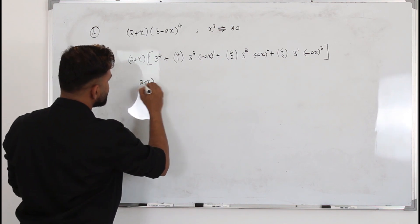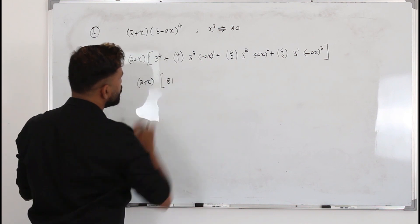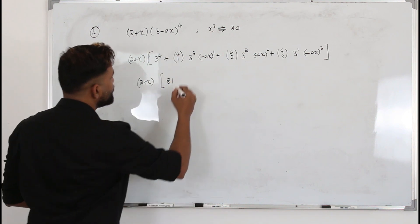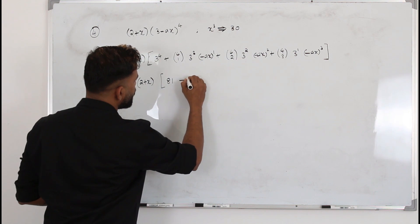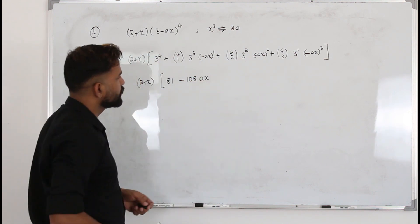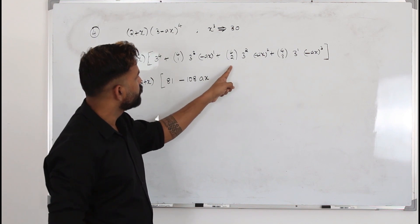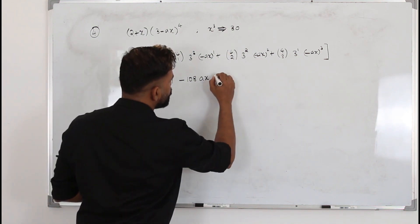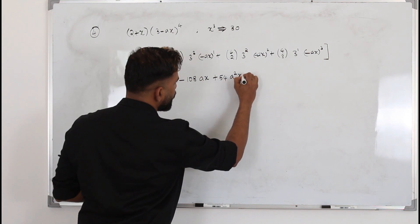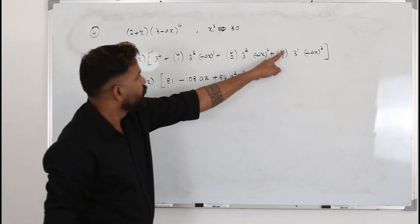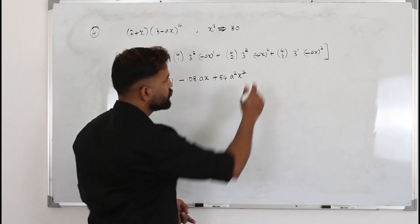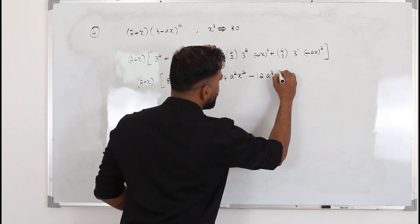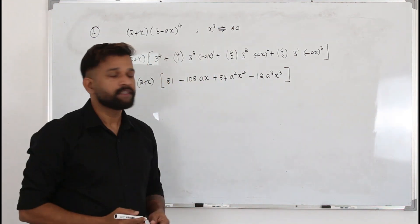2+x times [3⁴ is 81, plus 4C1 times 3³ which is 27, 4 times 27 is 108, so -108ax, plus 4C2 which is 6 times 9, so +54a²x², plus 4C3 which is 4, and when you cube it this becomes negative, so -12a³x³]. So that's your next step.